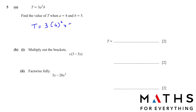Part b1: multiply out the brackets. x times 3 is 3x, and negative 5x multiplied by x is negative 5x². When we multiply variables that are the same, we add the powers. If you just see x, the power is 1, so 1 plus 1 equals 2.